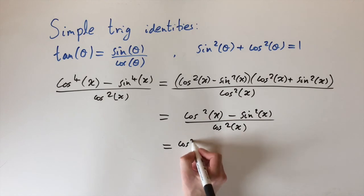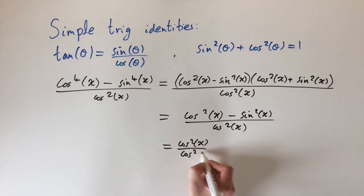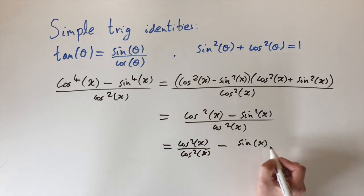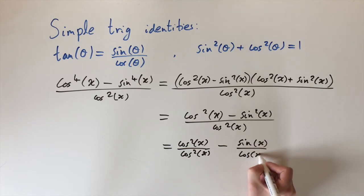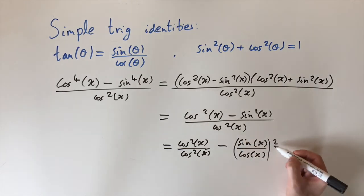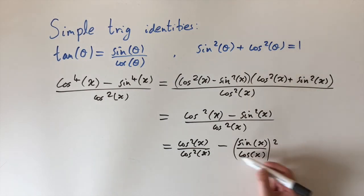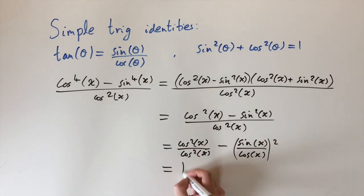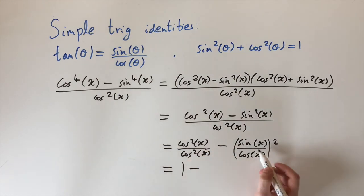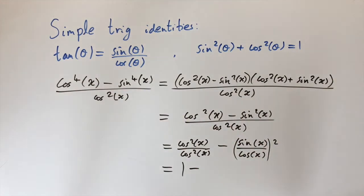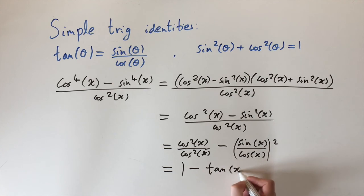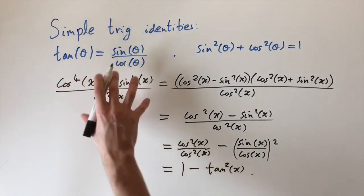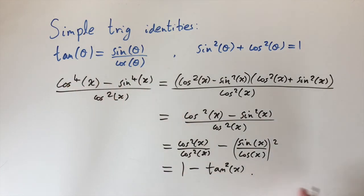We split the fraction into two parts: cos²x/cos²x minus (sinx/cosx)². The first term cancels to give one, and since sinx/cosx = tanx by our first identity, the second term is tan²x. So the entire expression simplifies to 1 − tan²x.